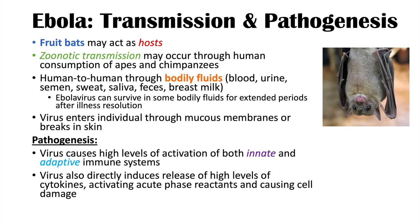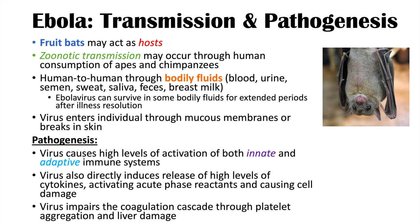This puts the immune system into hyperdrive and can lead to damage to the host. The virus also impairs the coagulation cascade through platelet aggregation and liver damage, as the liver is the site of synthesis of coagulation factors.